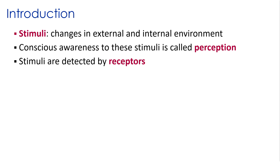Sensory information arriving at the CNS is called sensation, and if we are consciously aware of this sensation, we refer to that as perception. Perception only occurs if the information reaches the cerebral cortex. Not all sensory stimuli actually reach the cerebral cortex — for example, if you're in a noisy crowded room, there are likely many things you are hearing but not perceiving, because they're being filtered out by structures such as your thalamus.